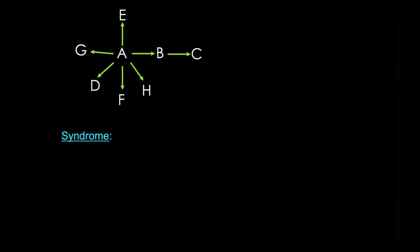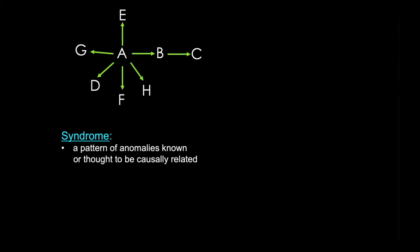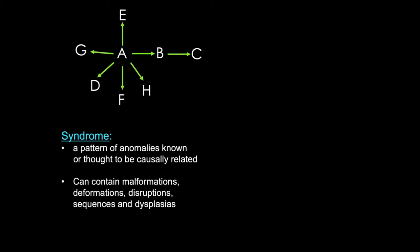Congenital abnormalities often occur in syndromes or sequences, and these terms can be quite confusing for students. A syndrome is a collection of anomalies that are known or thought to have a common cause, such as a chromosomal abnormality in Down syndrome. A syndrome can contain malformations, disruptions, deformations, sequences, and dysplasias. They're generally recognized and diagnosed by pattern recognition, and then confirmed by testing.